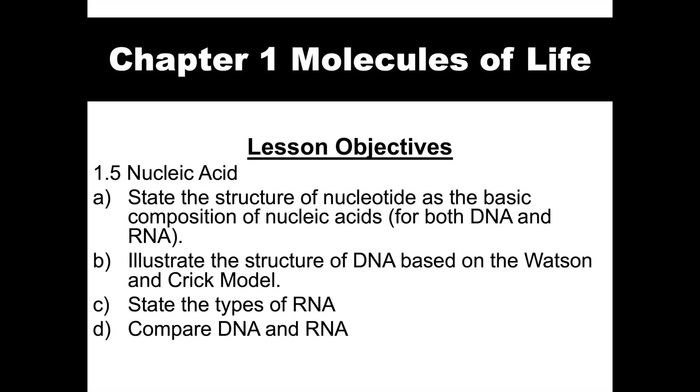These are the lesson objectives that you need to achieve at the end of the lesson. You need to be able to state the structure of nucleotide as the basic composition of nucleic acids. You also need to be able to illustrate the structure of DNA based on the Watson and Crick model. You need to be able to state the types of RNA. And lastly, you need to be able to compare DNA and RNA.